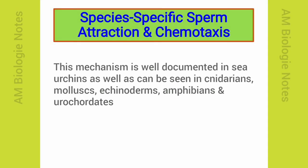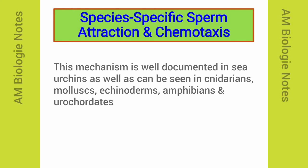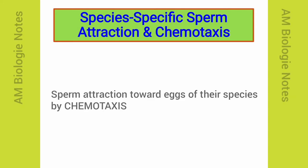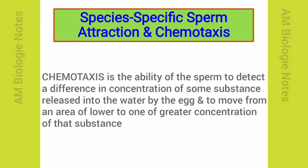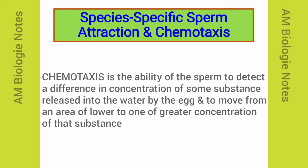Species-specific sperm attraction has been well documented in sea urchins. This species-specific sperm attraction can be seen in numerous species, including cnidarians, molluscs, echinoderms, amphibians, and urochordates. In many species, sperm are attracted toward eggs of their species by chemotaxis. Chemotaxis is the ability of the sperm to detect a difference in concentration of some substance released into the water by the egg, and to move from an area of lower to one of greater concentration of that substance. The mechanism of chemotaxis differs among species, and the chemotactic molecules are different even in closely related species.